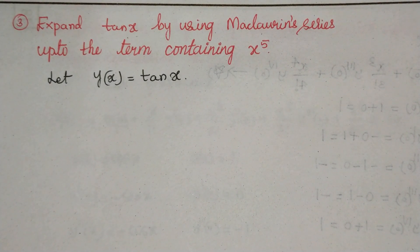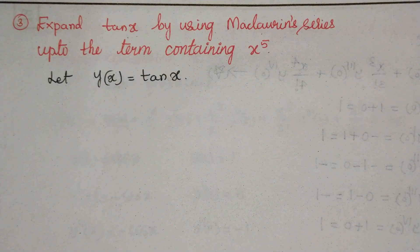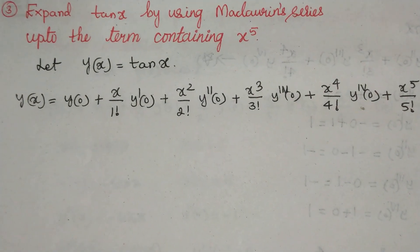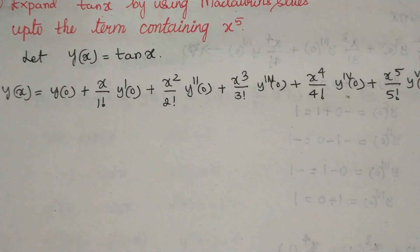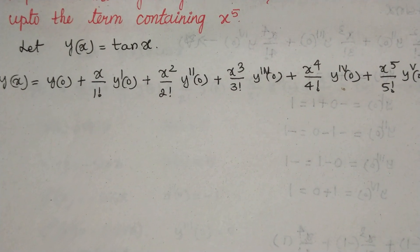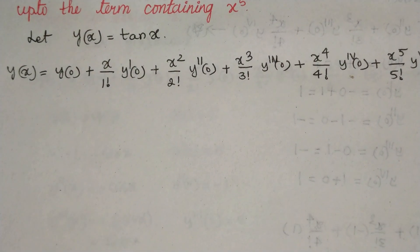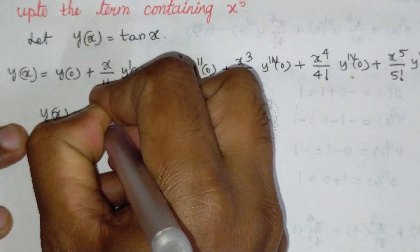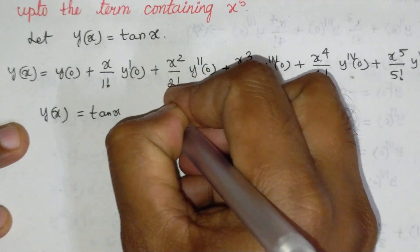Let us solve the next problem: expand tan(x) using the Maclaurin series up to the term containing x to the power 5. Let y(x) = tan(x). We will use the Maclaurin series of y(x) up to the term containing x^5, so we need to calculate the derivatives of y(x).